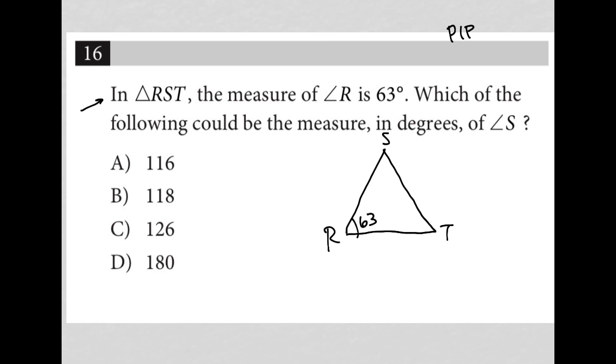Which of the following could be the measure in degrees of angle S? So what do we know? We know we have an angle S, and we know we have an angle T, and we know we have angle R that's 63 degrees. We know that angles R plus S plus T must be equal to 180. So if we know that R is 63, then that becomes 63 plus S plus T is 180.